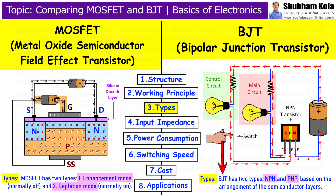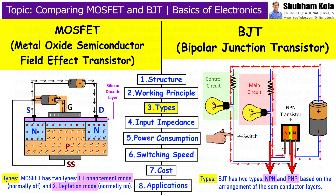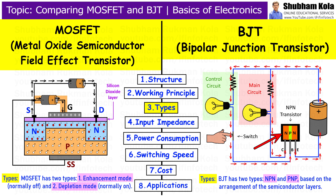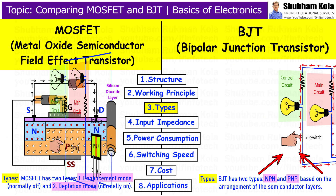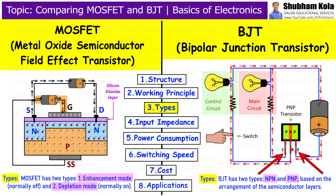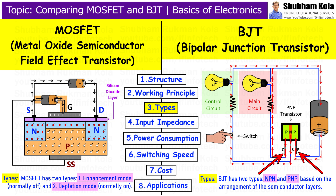BJT is of two types: NPN and PNP, based on the arrangement of semiconductor layers. In an NPN transistor, the current flows from the collector to the emitter, while in PNP transistors, the current flows in the opposite direction, from emitter to collector.